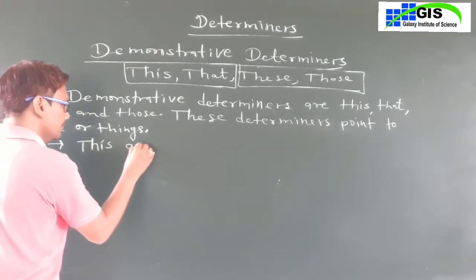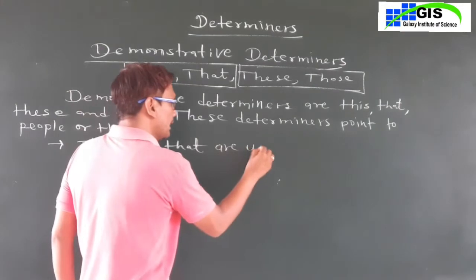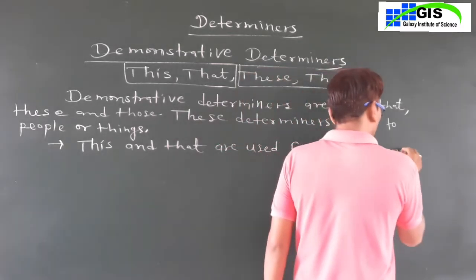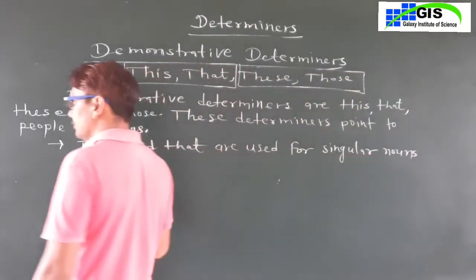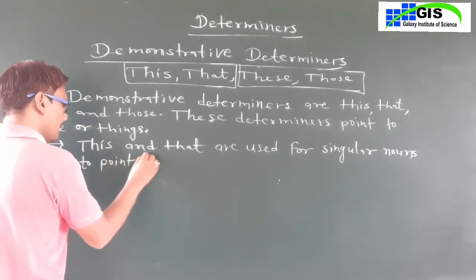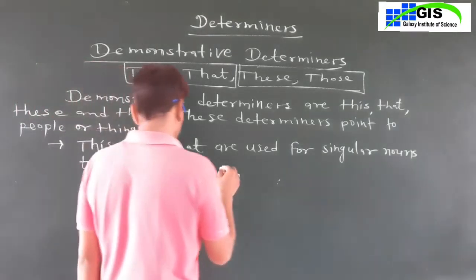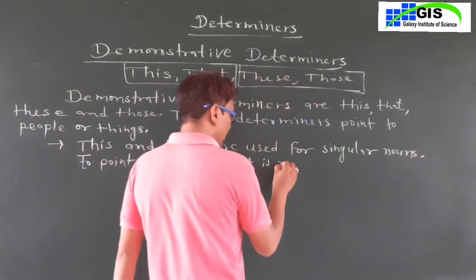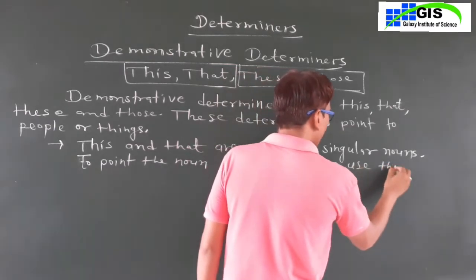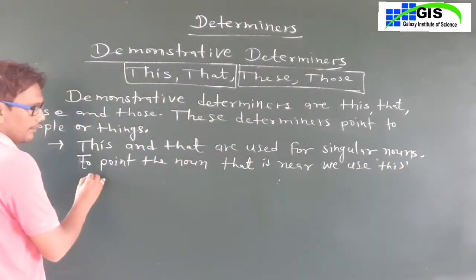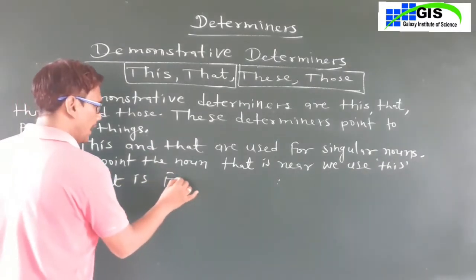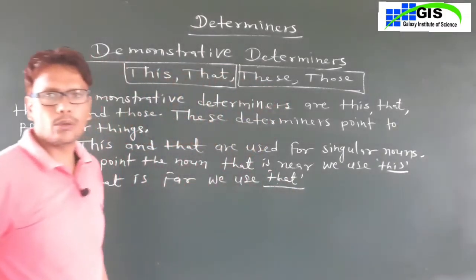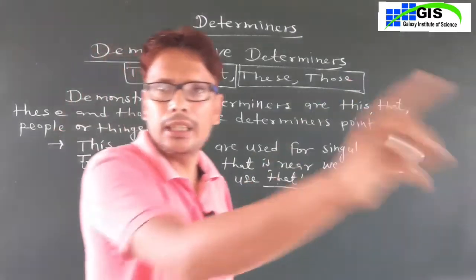This and that are used for singular nouns. To point to the noun that is near, we use 'this', and the noun that is far, we use 'that'. Matlab kahne ka: yadi koi bastu ek vachan hai aur nikat ki bastu hai toh 'this' lagate hain; ek vachan hai aur door ki bastu hai toh 'that' lagate hain.